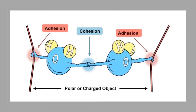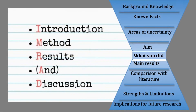This brings us to the idea of adhesion and cohesion. Two water molecules, which are similar, cohere — they stick together. But they adhere to dissimilar objects or substances, for example a water droplet clinging to a window. We can use this principle of adhesion and cohesion to help us determine how to structure our paragraphs. But before we do that, we can return to our IMRAD structure to understand how coherence and adherence are useful concepts.